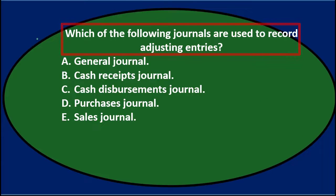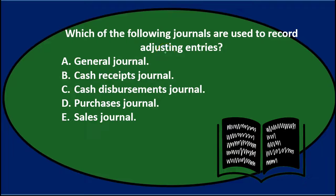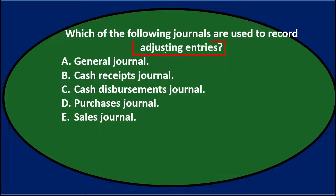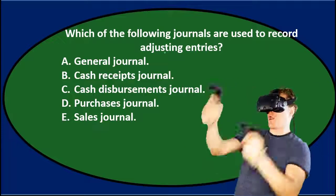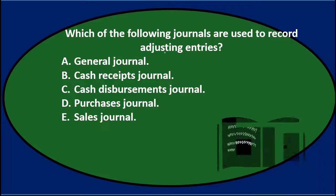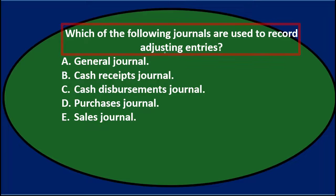Let's think about what adjusting entries are. Adjusting entries happen after we have done the normal journal entries throughout the process. If we are using special journals, we do the day-to-day transactions, entering information into the special journals, then recording those to the general journal at the end of the time period, posting them to the general ledger, and creating financial statements.